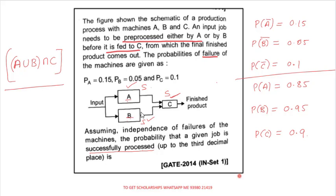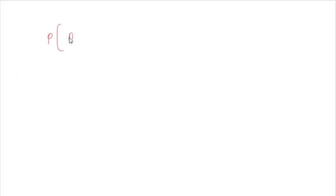Parallel means we use union, and series means intersection. So the expression becomes P((A ∪ B) ∩ C). Since the failures of each machine are given as independent, we can write this as P(A ∪ B) multiplied by P(C).